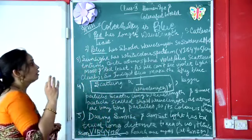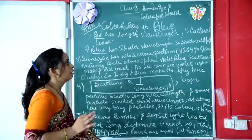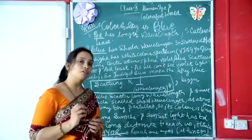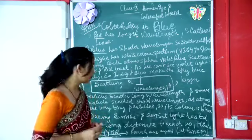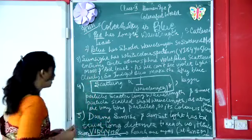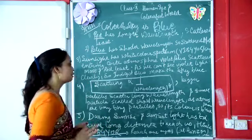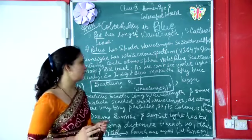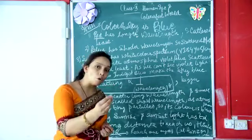This makes the violet and indigo colors contribute to the color of the sky. As we also know, the particles present in the atmosphere are of very small size.